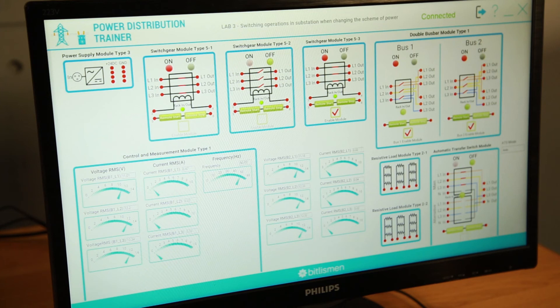And here with turning off the five three we will simulate the disconnection of the grid, and the ATS will automatically switch to the alternative source.